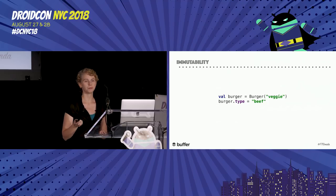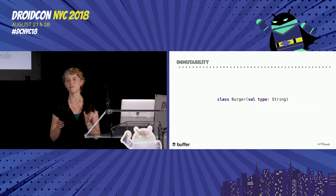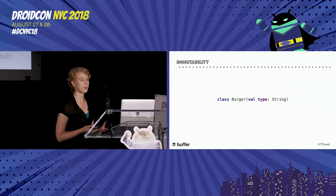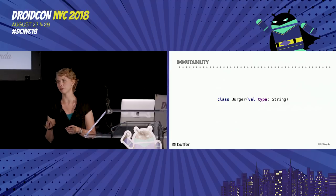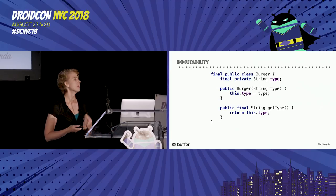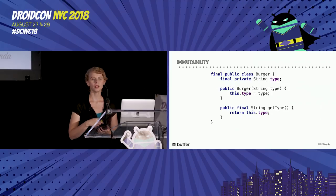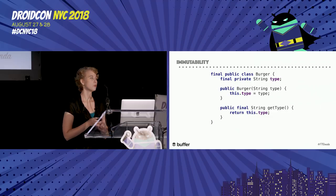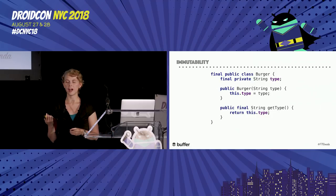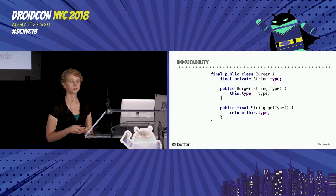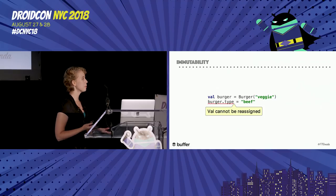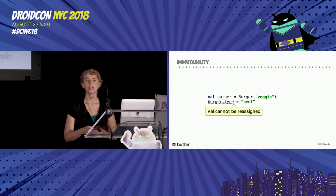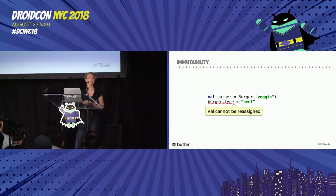Let's make this immutable. In Kotlin, all we have to do is change that var to val — that makes this a final, immutable property. Strings are also immutable, so we don't have to worry about the string object itself changing. Here's the Java equivalent: the field is made final and the setter is removed, and the class is also final. Classes are final by default in Kotlin. Now if we try to modify the type, we get a compiler error. If we want a beef burger, we'll have to create an entirely new one.